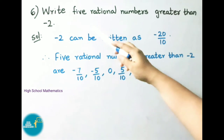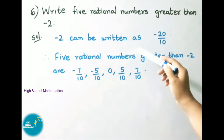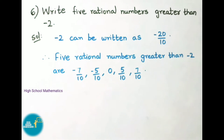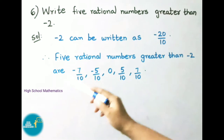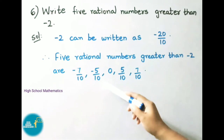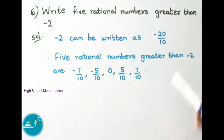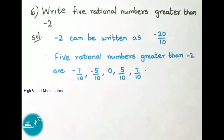See now question number 6: Write 5 rational numbers greater than -2. Let us see the solution. -2 can be written as -20/10 — that is, we have multiplied and divided -2 by 10, so it became -20/10. Therefore 5 rational numbers greater than -20/10 are taken from the numbers greater than -20/10.